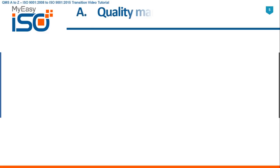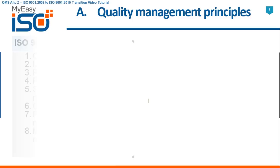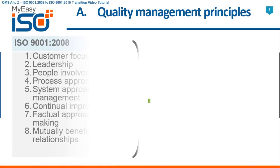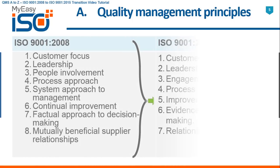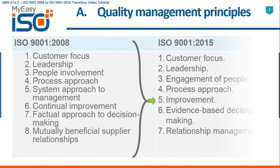A. Quality Management Principles. In ISO 9001 2008, we had 8 management system principles. These are replaced with 7 quality management principles in ISO 9001 2015.